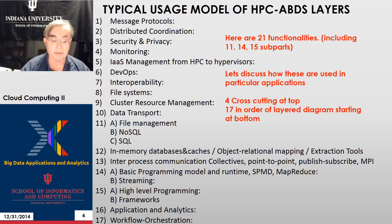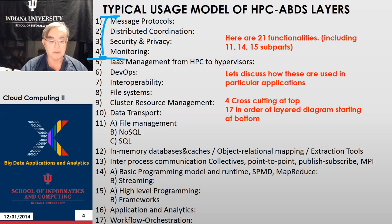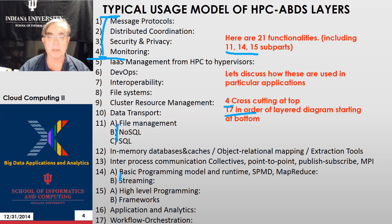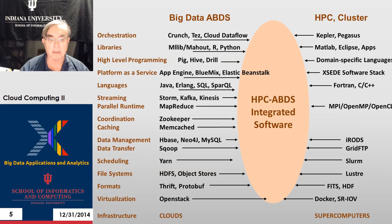Here's how they get used. These layers are written out, starting with the four cross-cutting layers. The bottom layer is now written at the top, done in numerical order. These are the 21 layers, which I call functionalities, including the sub-parts of levels 11, 14, and 15. In this lesson, we'll tell you how they get used, starting with cross-cutting at the top, then layer 17 in order of the layer diagram starting at the bottom. Before we do that, here are a couple more pictures about how they get used.